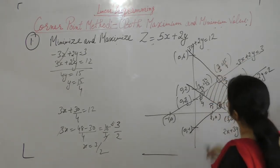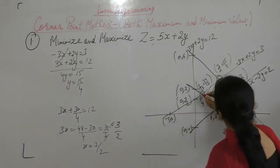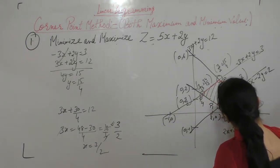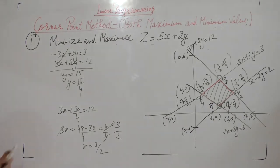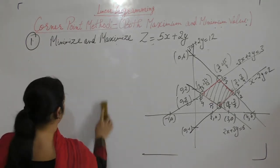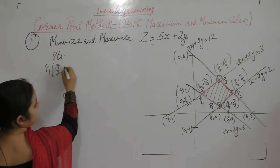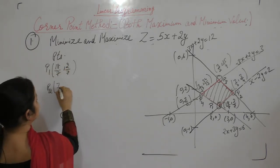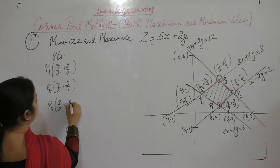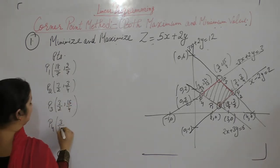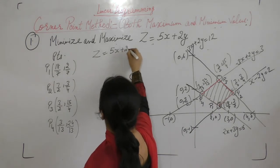This is the feasible region. We now have four corner points: P1 is (18/7, 2/7), P2 is (7/2, 3/4), P3 is (3/2, 15/4), and P4 is (3/13, 24/13). We want to find the maximum and minimum values of z equals 5x plus 2y at these points.